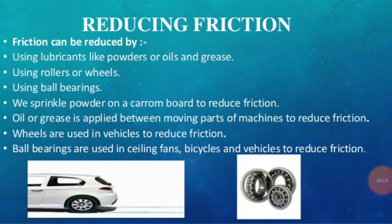Friction can also be reduced by using wheels to move objects. It is quite difficult to move a heavy suitcase by dragging it on the ground because the sliding friction between the suitcase and the ground is very large. If the suitcase is fitted with small wheels called rollers, it can be pulled very easily. This is because when wheels are attached, the sliding friction is converted into rolling friction, and the rolling friction between the wheels and the ground is much less. Even a child can pull a heavy suitcase fitted with small wheels or rollers.